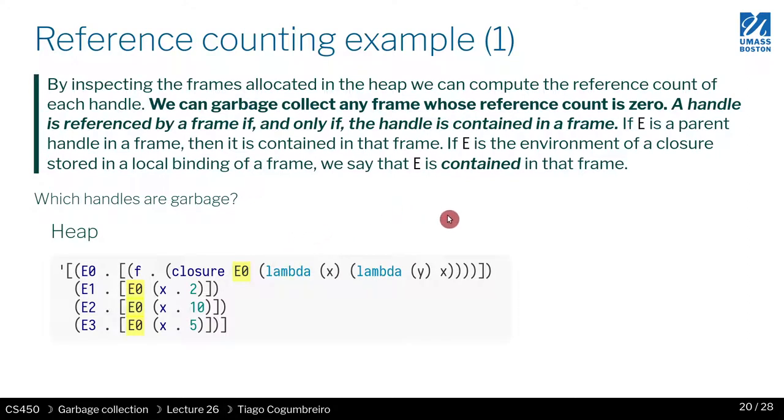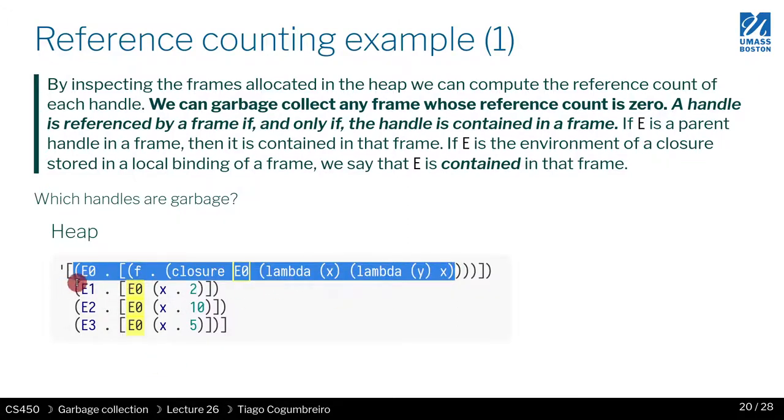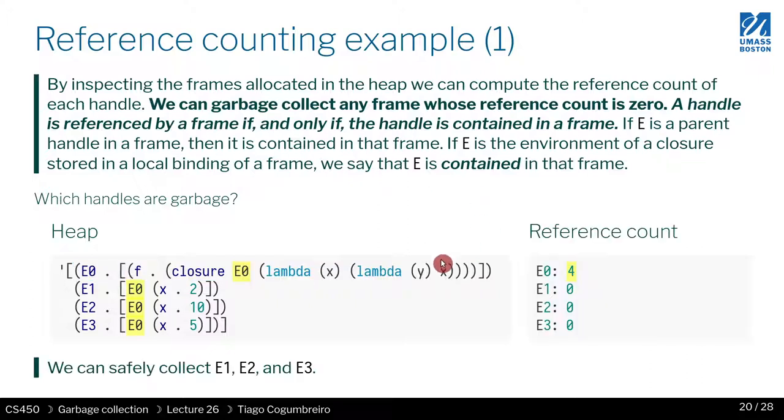So in our case, let's see if we could apply reference counting. If you recall the memory layout of our initial example, you will note that the function is referencing the environment in which it was created, which means that the counter of E0 is always 1. So you cannot decrement it. E1 has nothing pointing to it. E2 has nothing pointing to it. But for E0, you have multiple. So that means that at some point, even if you didn't have these frames, you would never be able to release this data.